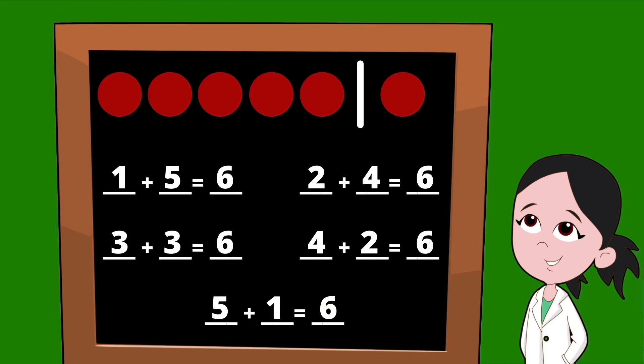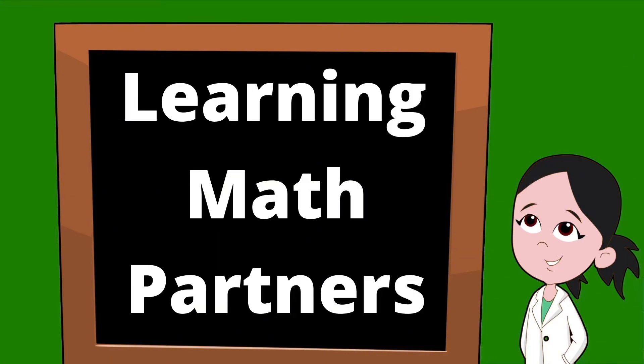There you have it. That's all of our six partners. One and five, two and four, three and three, four and two, and our last set of partners, five and one. Thanks so much for joining us.